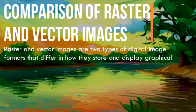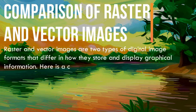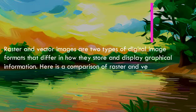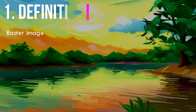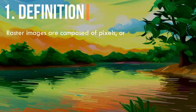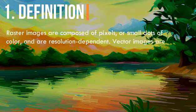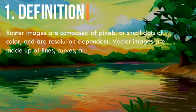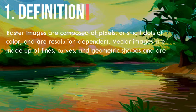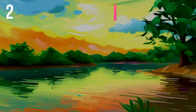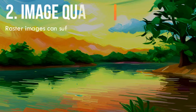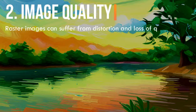Here is a comparison of raster and vector images. 1. Definition: Raster images are composed of pixels, or small dots of color, and are resolution dependent. Vector images are made up of lines, curves, and geometric shapes, and are resolution independent.